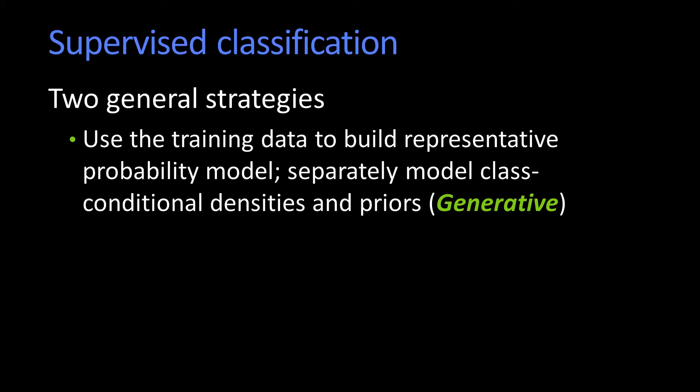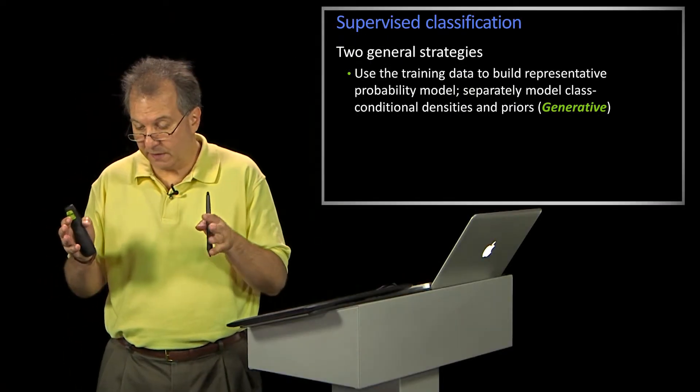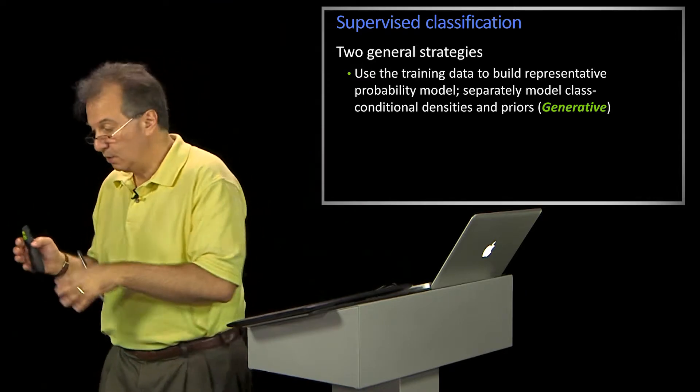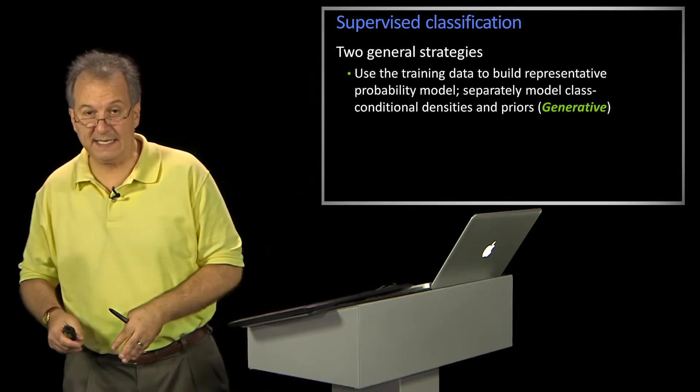The first method, which is referred to as generative, basically uses your training data from class A to build a model of class A. Separately, you build a model of class B, a model of class C, a model of class D.